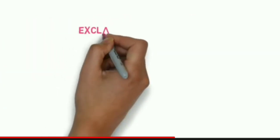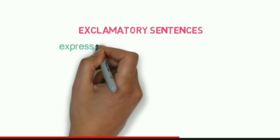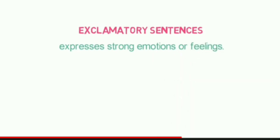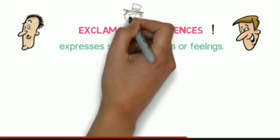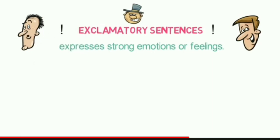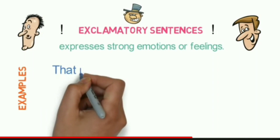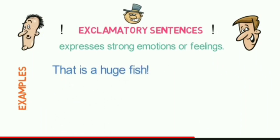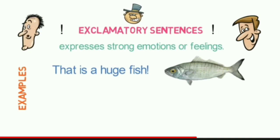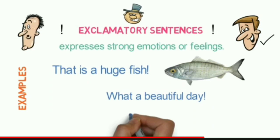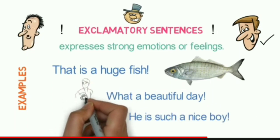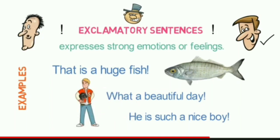Exclamatory sentences are used to express strong emotions or feelings and they end with an exclamation mark. When you are surprised, happy, or angry, you use an exclamation to express your emotion. For example: 'That is a huge fish!' — expressing surprise at the size of the fish. 'What a beautiful day!' — expressing happiness. 'He is such a nice boy!' — expressing satisfaction after meeting a very nice boy.